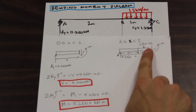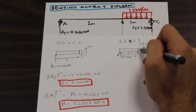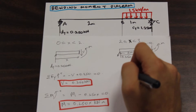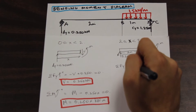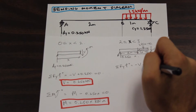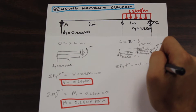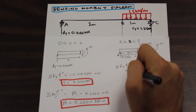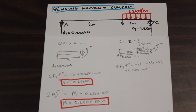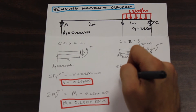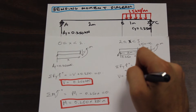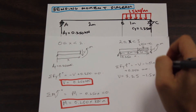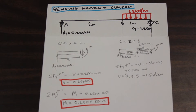Let's do the shear for this section. Taking the upward direction as positive, we have negative V, minus 1.5 times (X minus 2) from the distributed load, plus 0.250 from Ay, all equal to zero. Simplifying and solving for V gives us our shear equation for this section, in kilonewtons.